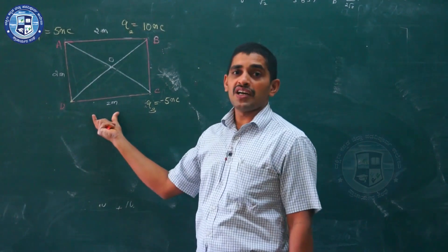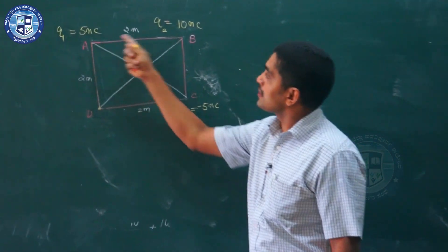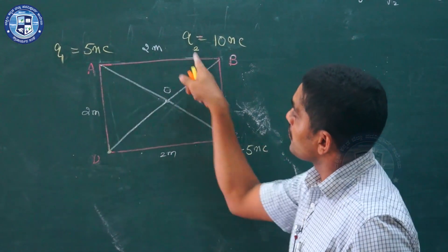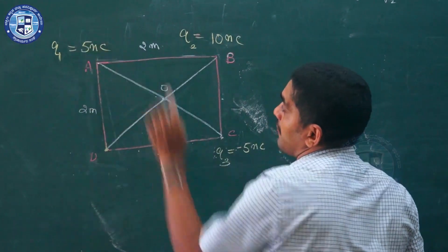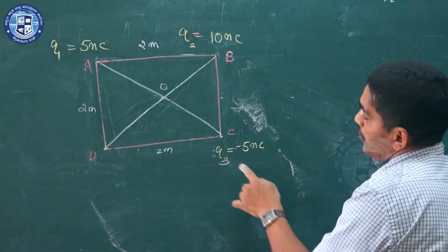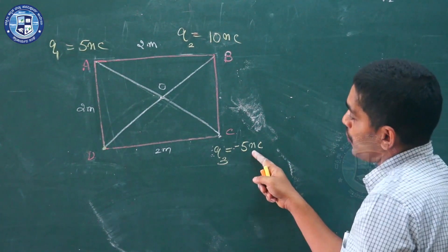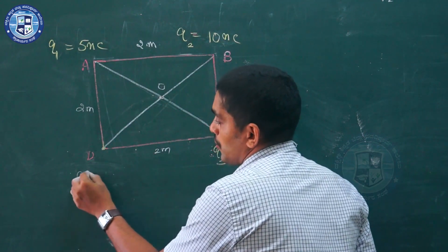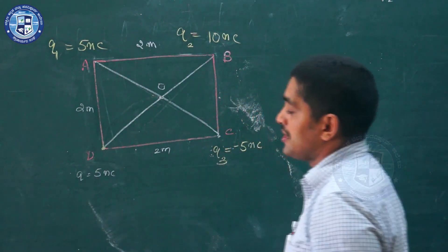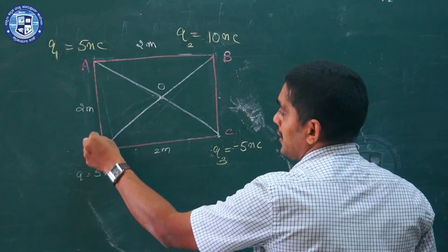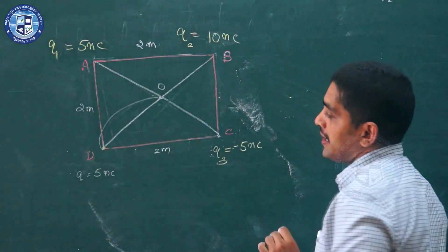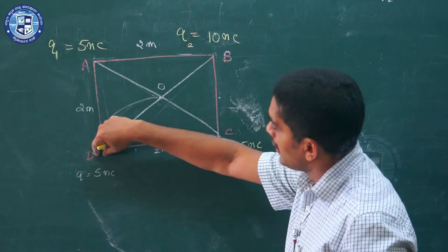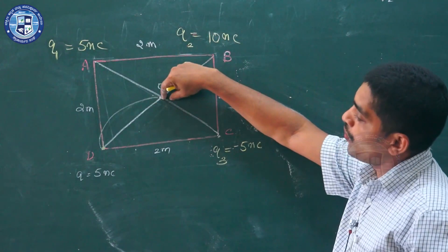A common question that comes in our board exam: there are 3 charges placed at the corners of a square of side 2 meters. A charge Q1 of 5 nanocoulomb is kept at A, at B there is 10 nanocoulomb, and a third charge of 5 nanocoulomb at the third corner C. The question asks: if a charge Q of 5 nanocoulomb is moved from point D to the center of the square O, what is the work to be done?